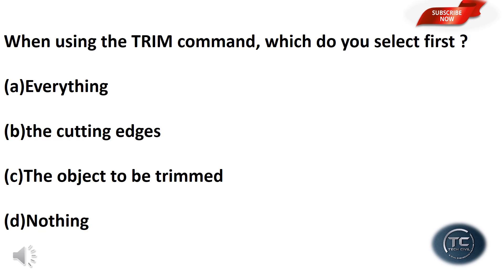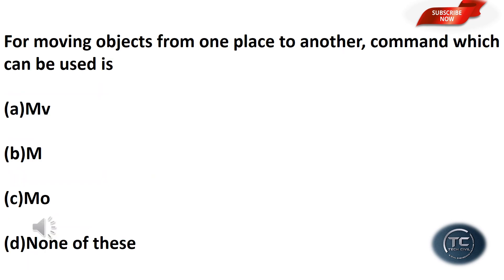When using the trim command, which do you select first? The options are everything, the cutting edges, the object to be trimmed, or nothing. The answer is option B: cutting edges. For moving objects from one place to another, which command is used? The answer is the move command, symbol capital M.